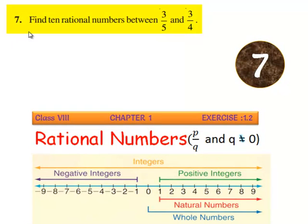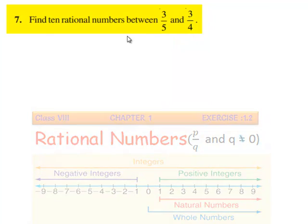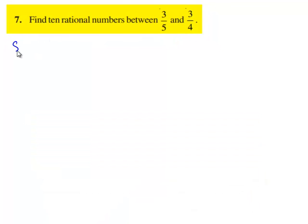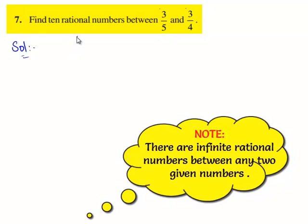Now let us move on to the 7th question. The question is find 10 rational numbers between 3 by 5 and 3 by 4. So let's move on to the solution. The given two rational numbers are 3 by 5 and 3 by 4.